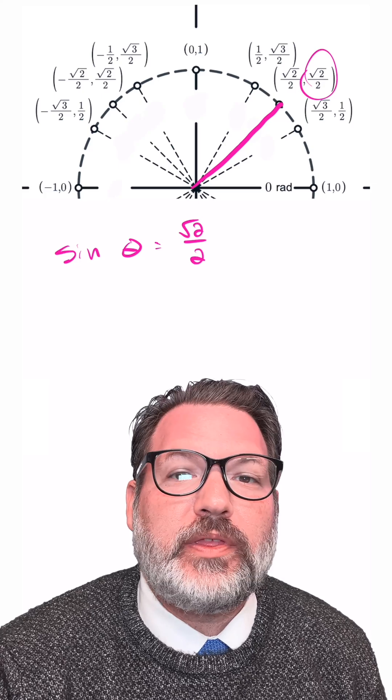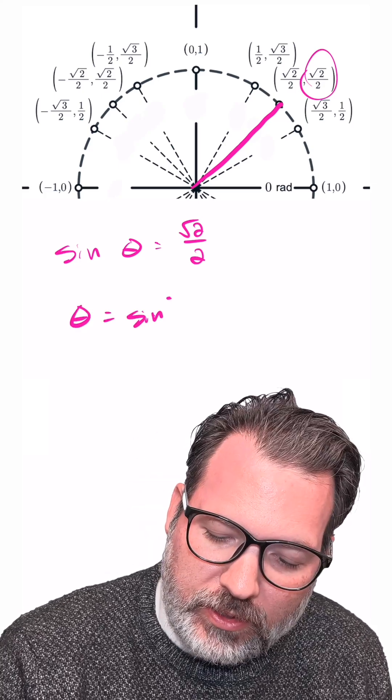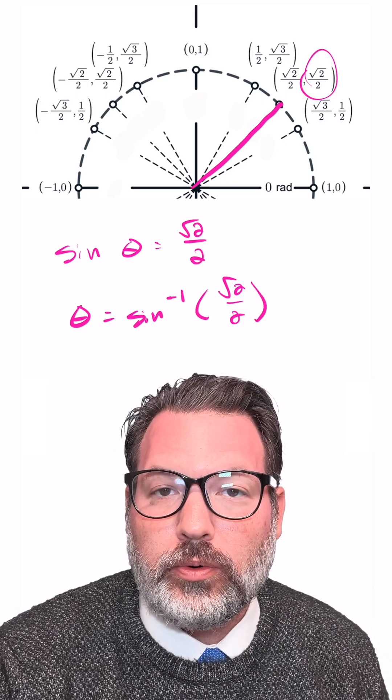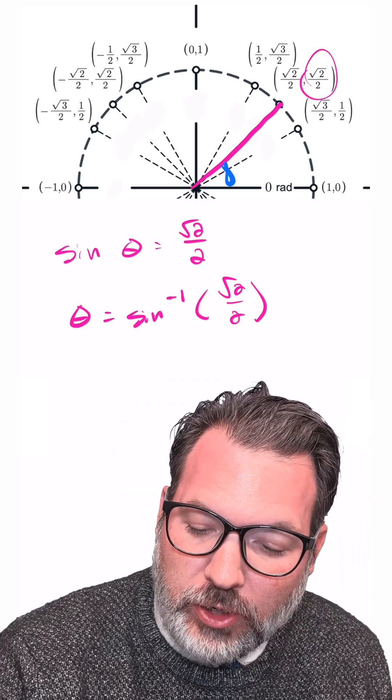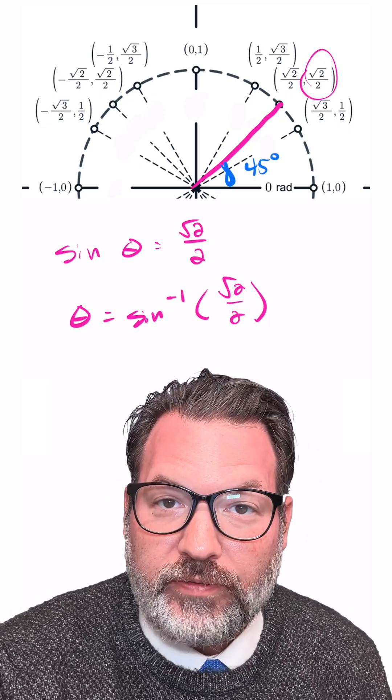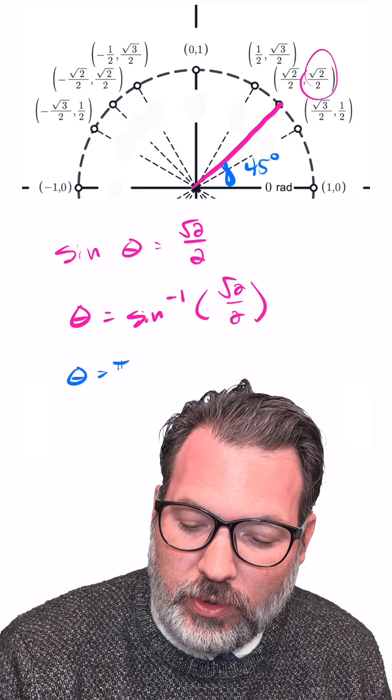Another way to write this is with an inverse function. We could write that theta is equal to the inverse sine of root 2 over 2. Now, you might be able to tell in this case I chose a nice angle that works out to pi over 4 radians, or 45 degrees, and so that's what our calculator would return to us.